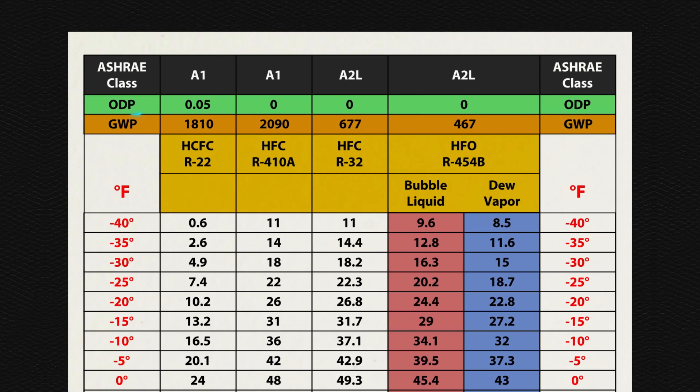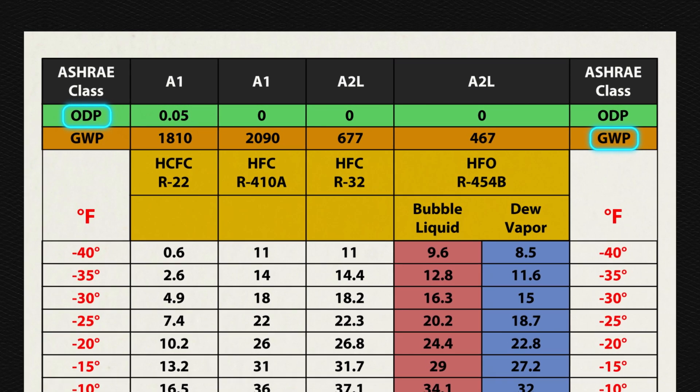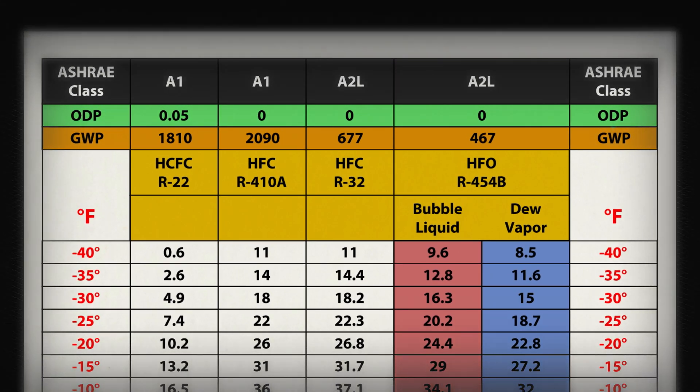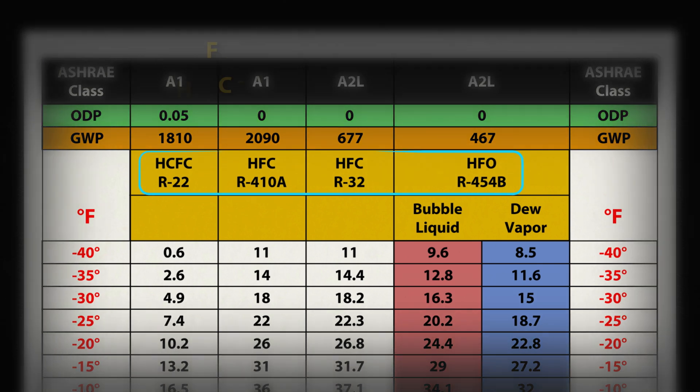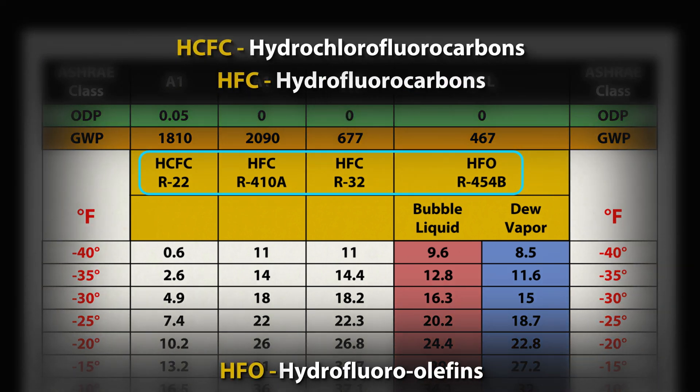The ozone depletion potential and global warming potential have direct environmental impacts, and hence why refrigerants are phased out. The refrigerant type abbreviations represent the scientific name.